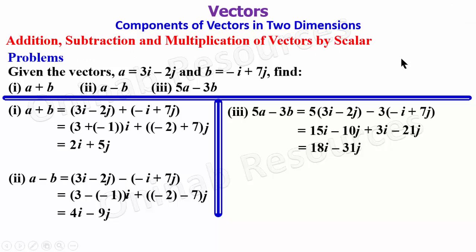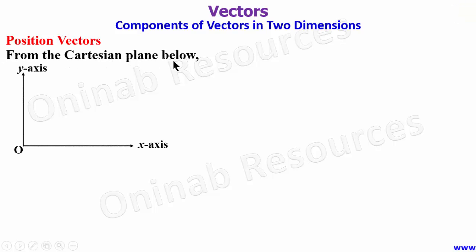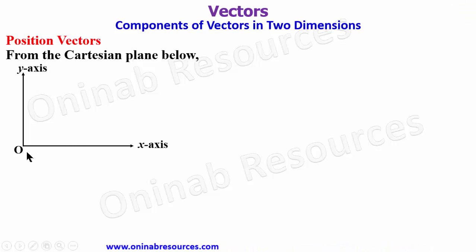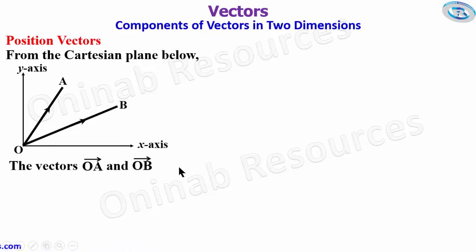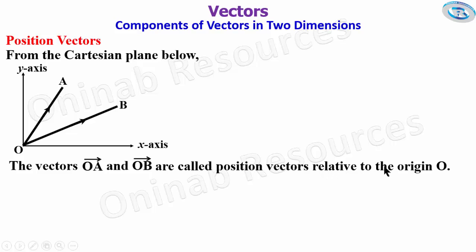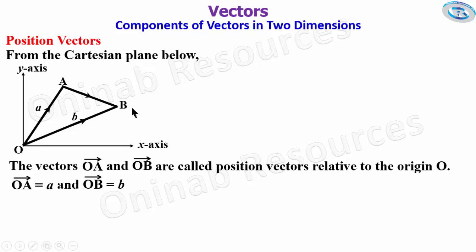We then go to position vectors. From the Cartesian plane, we have the x-axis, y-axis, and origin. If we have vectors OA and OB, they are called position vectors relative to the origin O. We can name these as a and b respectively, and find another vector from A to B, which we call AB.